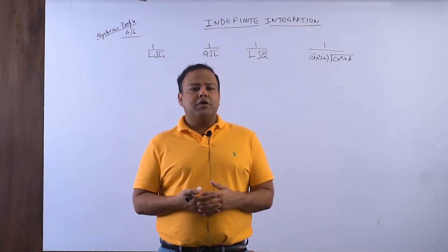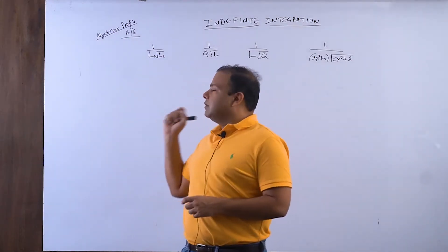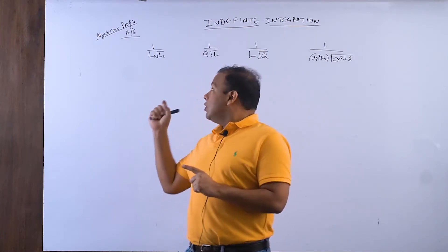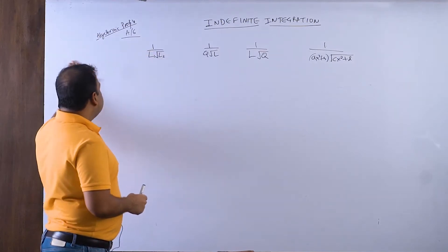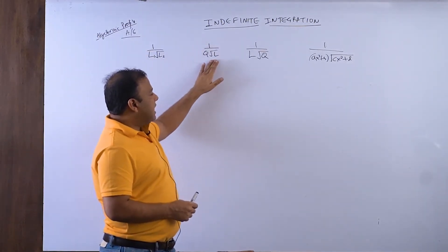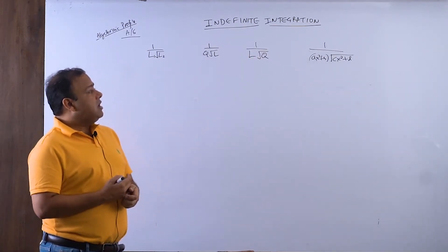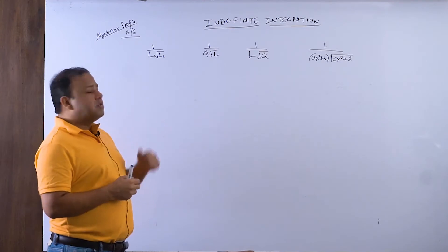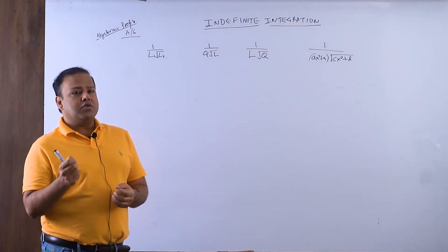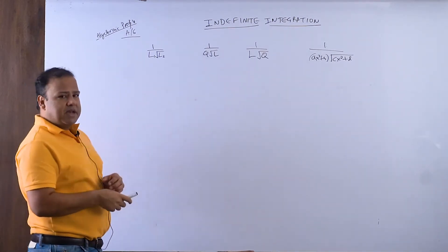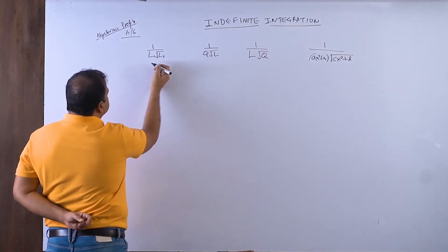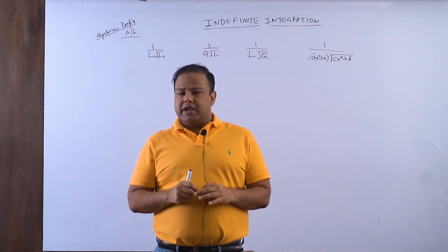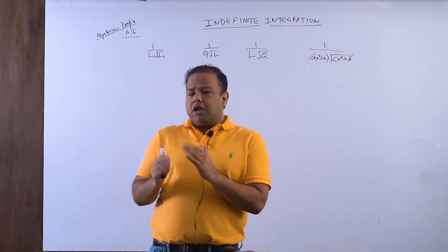Hello students, welcome back. Let's continue with indefinite integration, algebraic profile number 6. So far we have covered profiles 1 through 5 in algebra. This is profile 6, which covers forms: 1 over L1·√L2, 1 over Q·√L, 1 over L·√Q, and 1 over (ax²+bx+c)·√L. Here L stands for linear meaning ax+b type, and Q stands for quadratic meaning ax²+bx+c type.